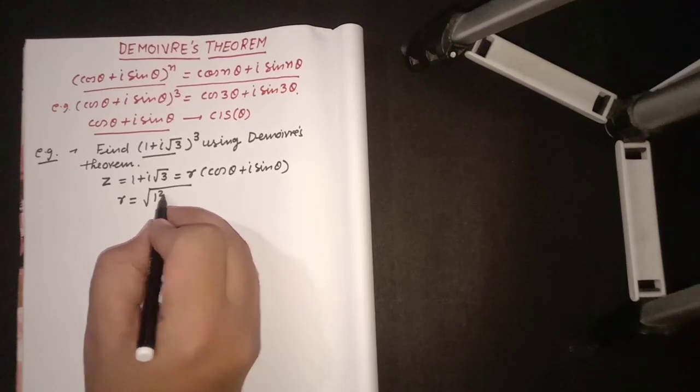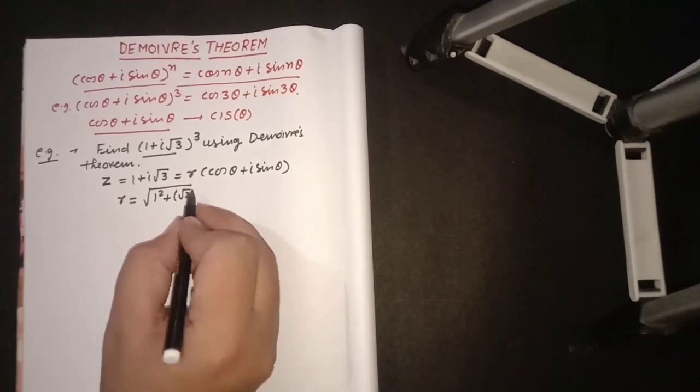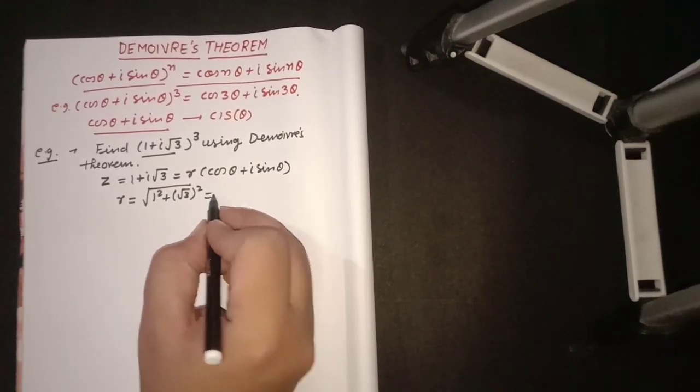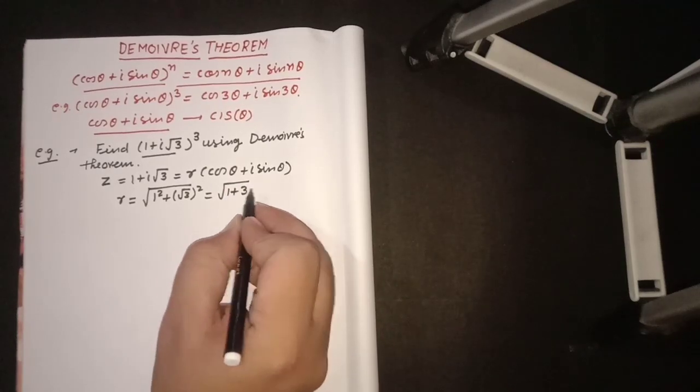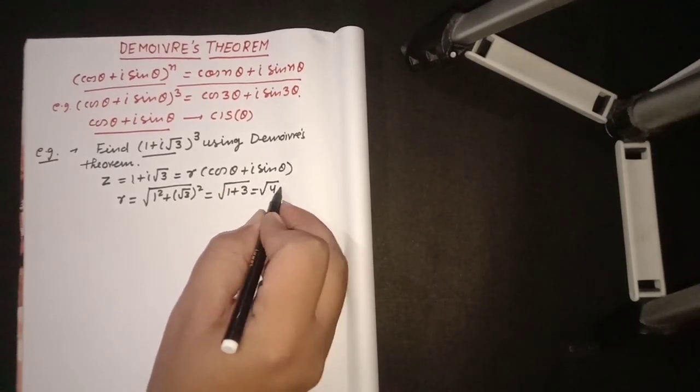We will sum the coefficients here in square root. It's square root. So that will be √(1 + 3) = √4. So 2 will come out.